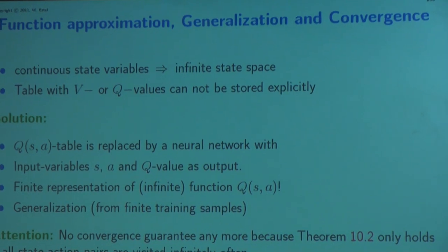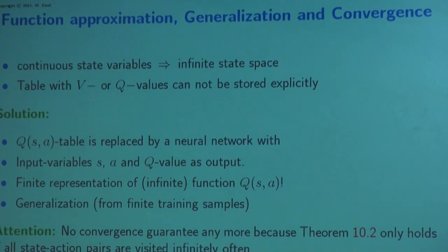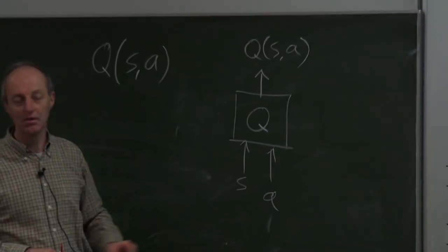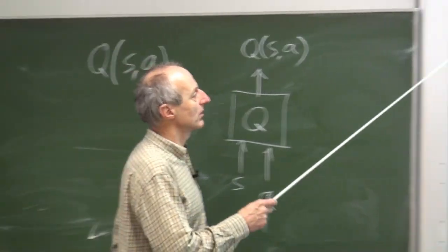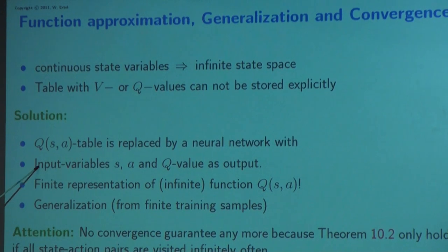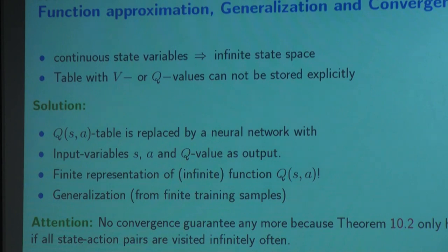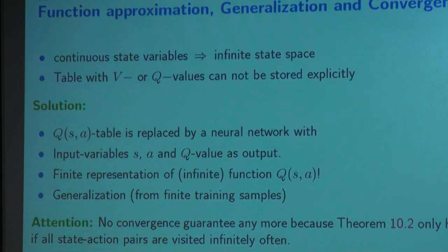We use function approximation to store our Q-function, and the same can be done for value iteration where the value function only depends on the state. The Q-table is replaced by a neural network with input variables s and a and Q-value as output. We have a finite representation — for example, a neural network with 100 weights. Crucially, we also get the generalization capabilities of such a function.